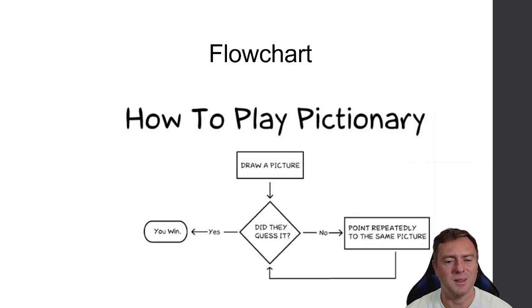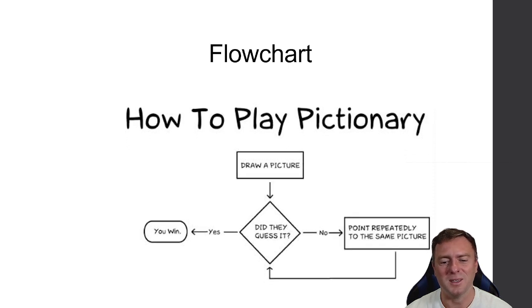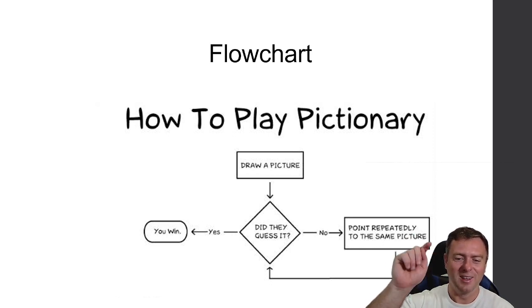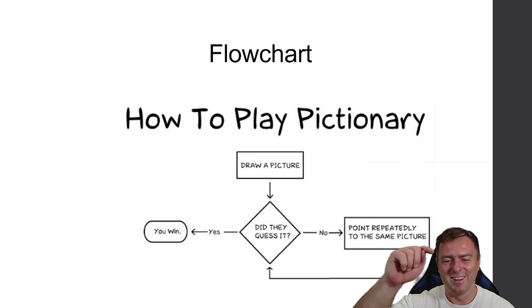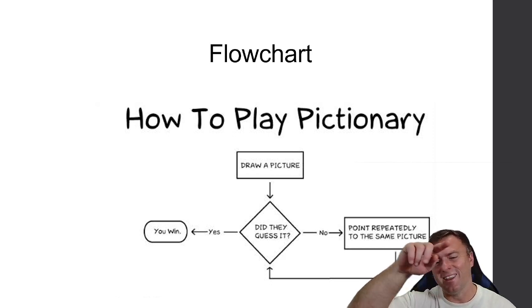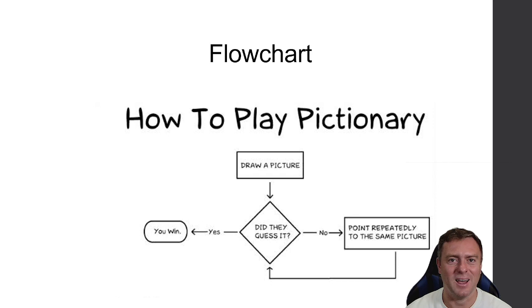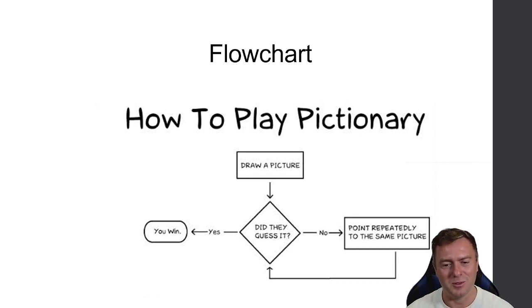So a flowchart. Here's another one that I found. So draw a picture. Did they guess it? No. Point at the same picture repeatedly. And that's a bit of a meta joke. Did you get it yet? Have you gotten it? No. Well still keep pointing at it. And then as soon as you did get it, yes you win. And then you can exit out of the loop that was trapped.